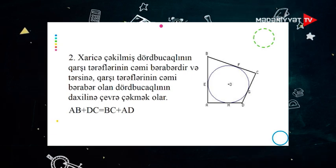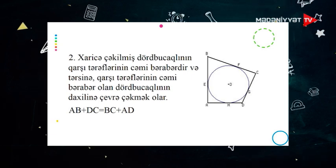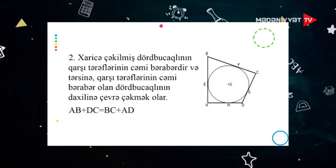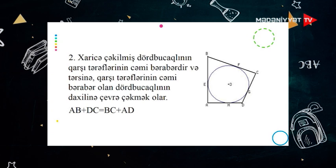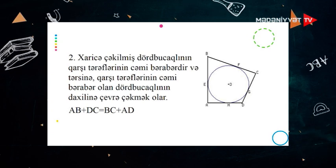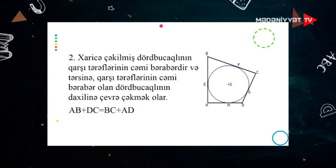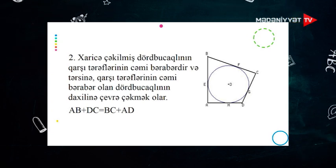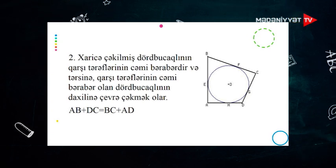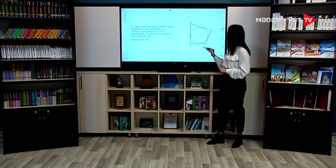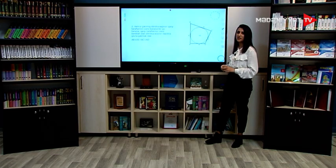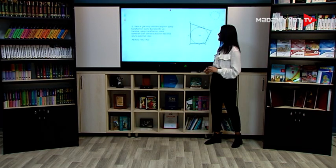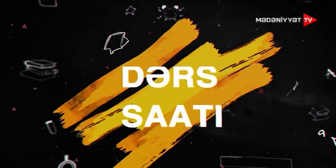Yenə şəklimizdə görürük ki, bir çevrə verilib və onun xaricinə bir dörd bucaqlı çəkilmişdir. Burada AB üstəgəl CD bərabər olacaq AD üstəgəl BC-yə, yəni qarşı tərəflərin cəmi bir-birinə bərabər olacaq.